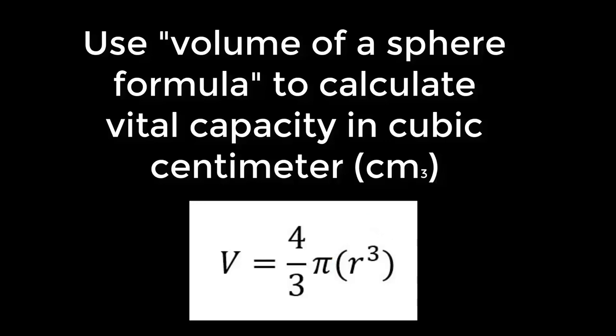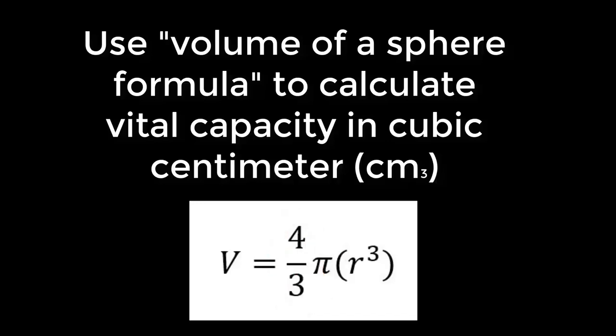Multiply that cubed radius by pi, or 3.14, and then multiply that number by 4/3, or 1.33. That will give you the volume of your balloon, which tells you the volume of air that you were able to exhale.